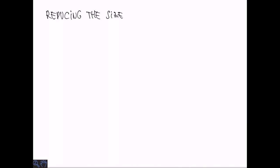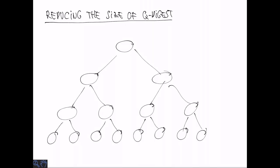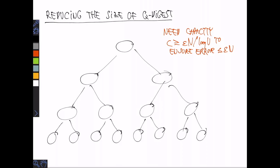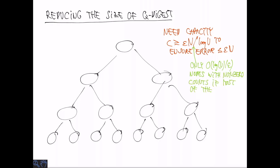The way we have described it, the Q digest can grow quite large. So there is a need to reduce the size. The value of C needed to ensure an epsilon n error is epsilon n over log u. This grows with n, which means that capacity can arise as the number of elements grows. We can observe that if most of the nodes are within a constant factor of capacity, then we actually only need log u over epsilon nodes, which is only a logarithmic factor from the size of the quantiles.